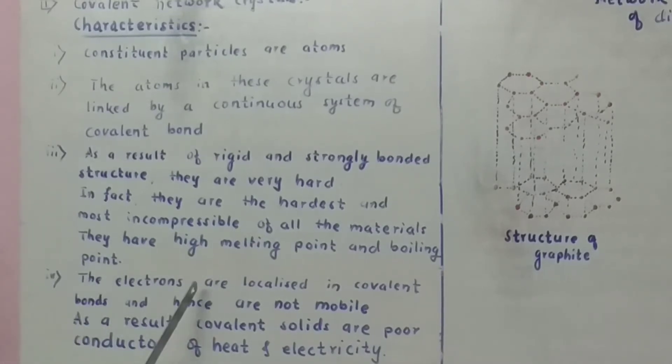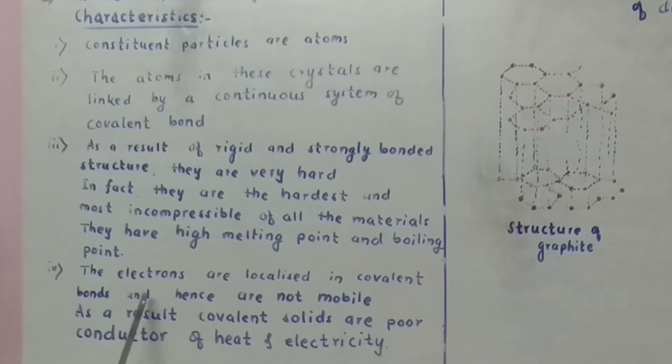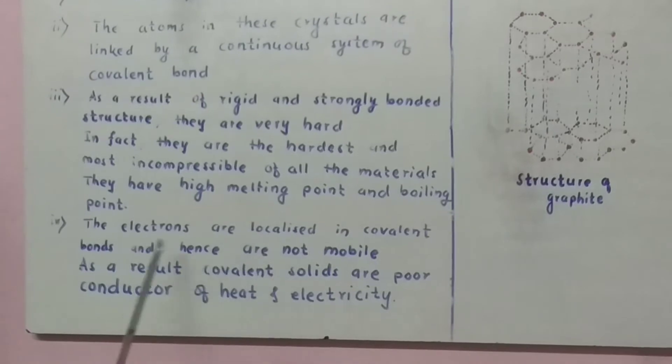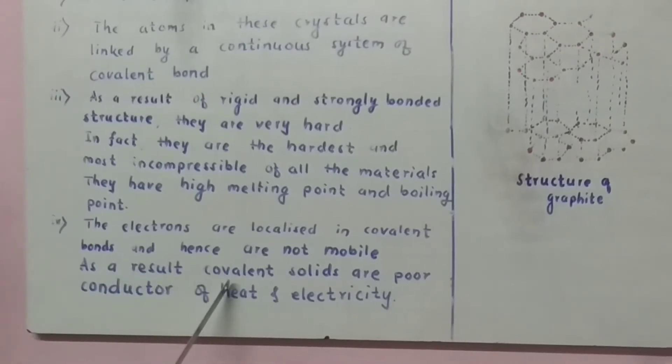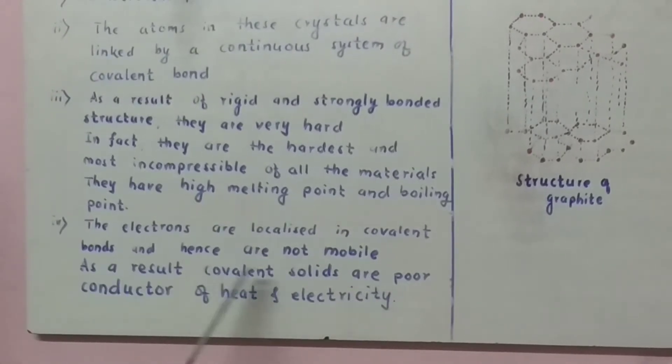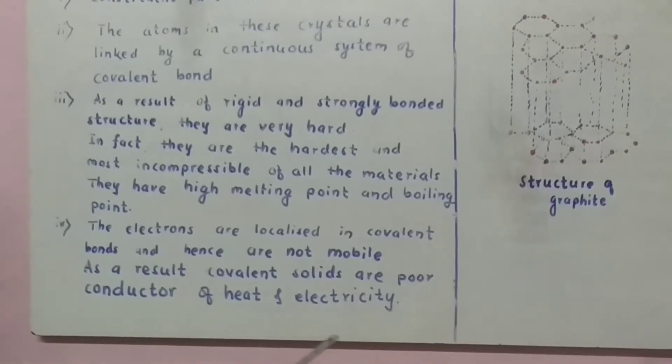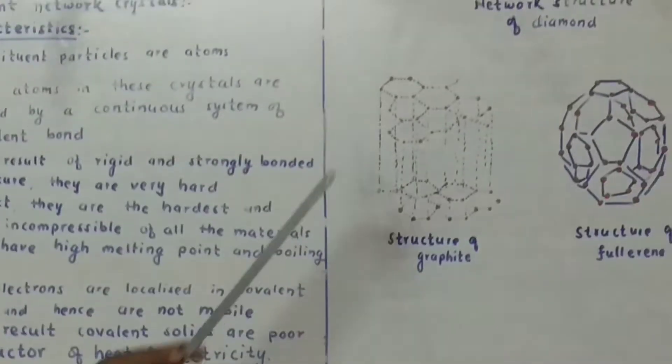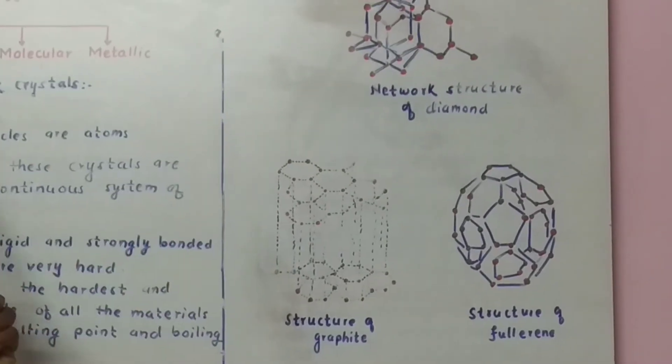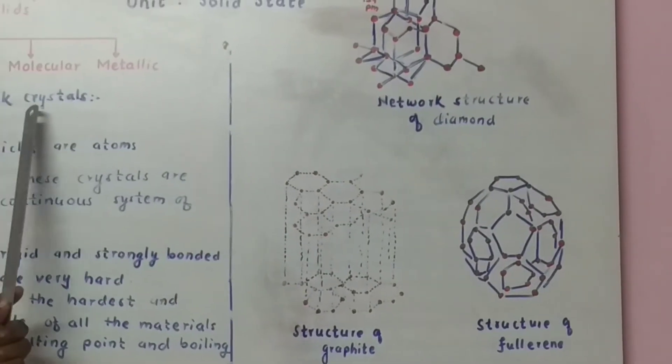The electrons are localized in covalent bonds and hence are not mobile. As a result, covalent solids are poor conductor of heat and electricity. So here are some examples of covalent network crystals.